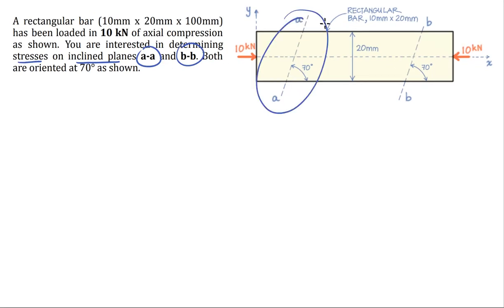We want to know what's happening at inclined planes AA and BB. There is AA, there is BB. Both of the planes are oriented at 70 degrees as shown.